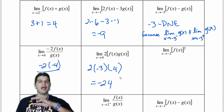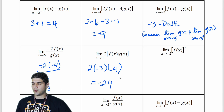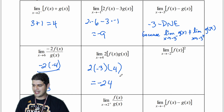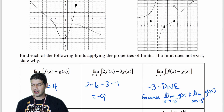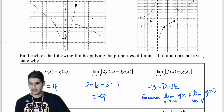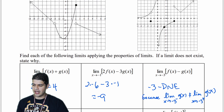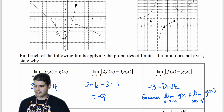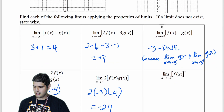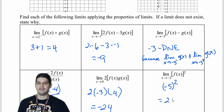In this problem we have f of x squared, and we're looking at x approaching negative 2. At negative 2, f of x has a y-value of negative 5. So we get negative 5 squared, which gives us 25.